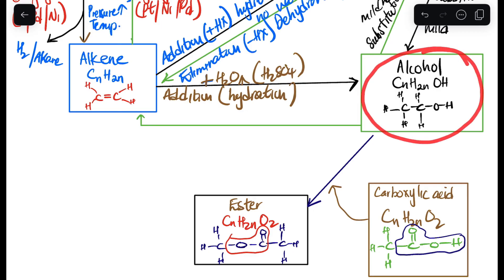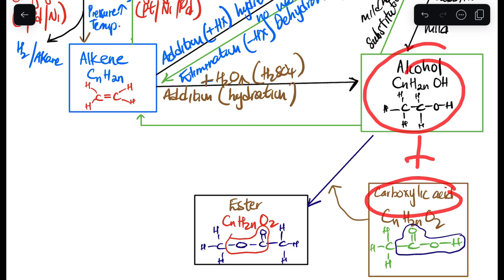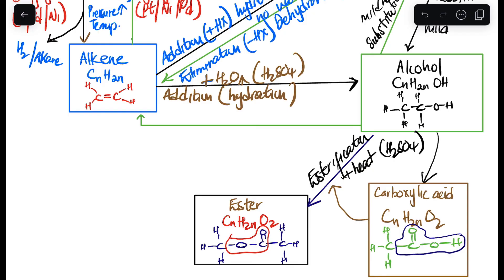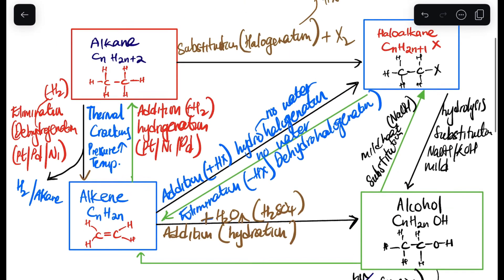From an alcohol to an ester — when we add an alcohol with a carboxylic acid, it gives us an ester. This reaction is called esterification — do not call it just 'ester.' The reaction conditions are heat and either sulfuric acid or phosphoric acid as a catalyst. Water is also a product, because we are condensing out water. Esterification is a condensation reaction.